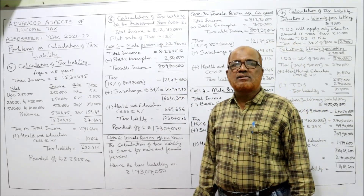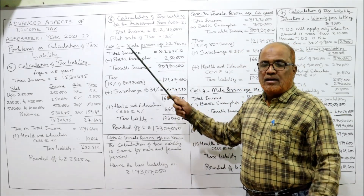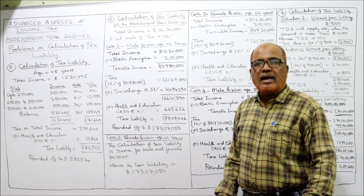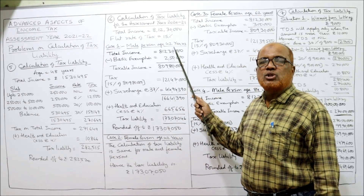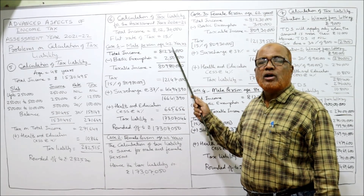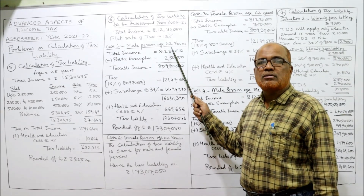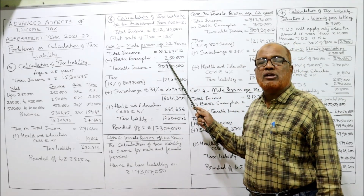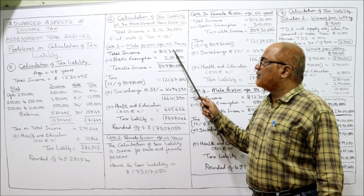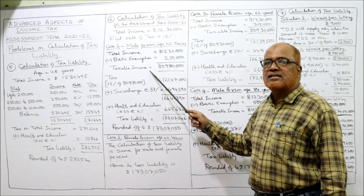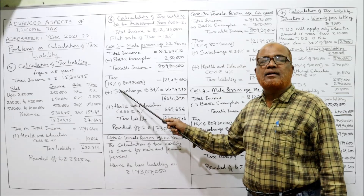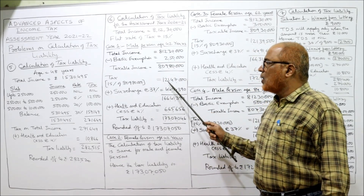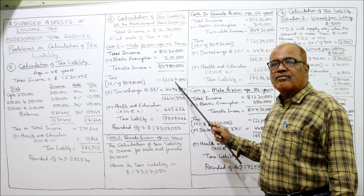Case 1: if the SSC is a male person aged 42 years. Age 42 means non-senior citizen; basic exemption limit is two lakh fifty thousand. Total income eight crore twelve lakh thirty thousand, less basic exemption two lakh fifty thousand, gives taxable income of eight crore nine lakh eighty thousand. Tax is calculated at the flat rate of fifteen percent: fifteen percent of eight crore nine lakh eighty thousand gives one crore twenty-one lakh forty-seven thousand.